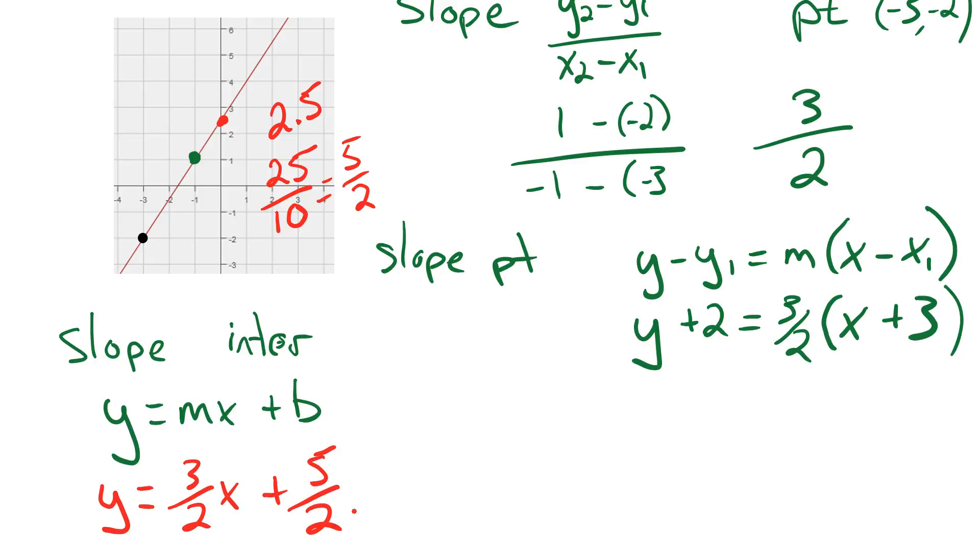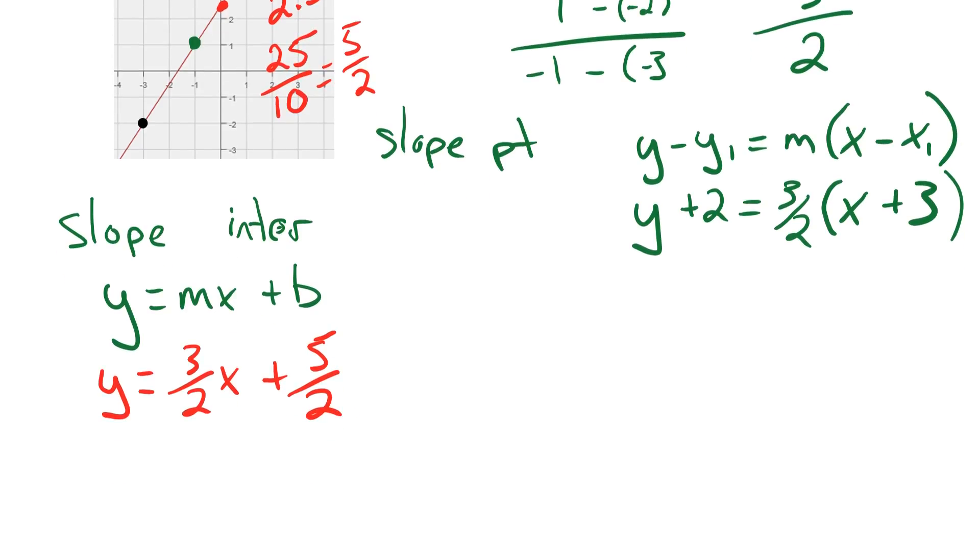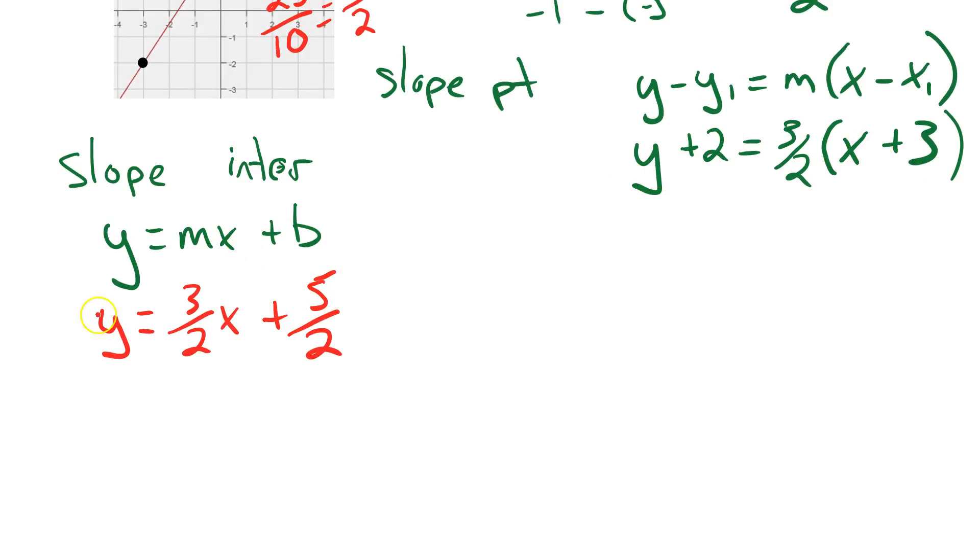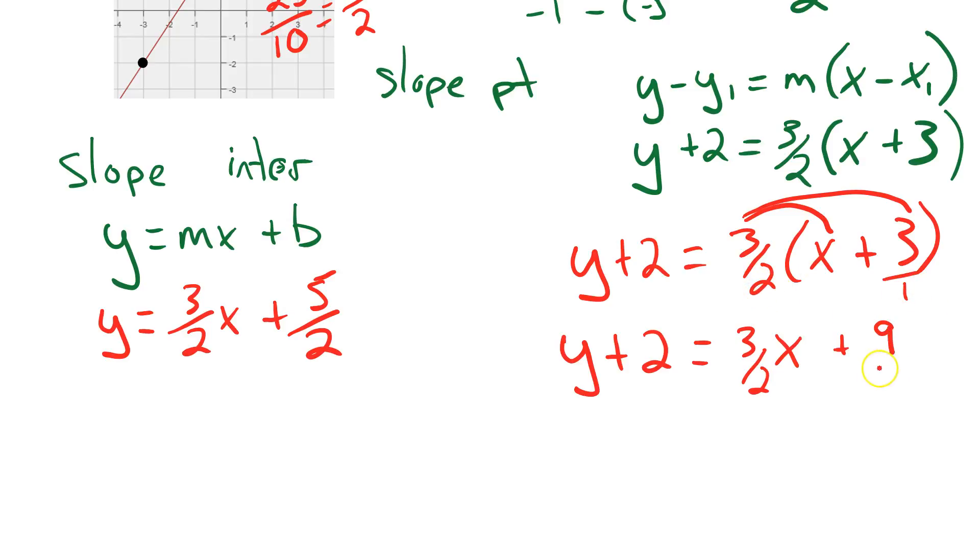Now the other option I have is to take my slope point form and manipulate it into this slope intercept form. In that case, what I would do is I will write out my formula. And first thing I do is distribute. This times this. This times this. So y plus 2 stays where it is. 3 over 2 times x is 3 over 2x. Now watch what I do here. 3 over 2 times 3. Well, 3 is really like 3 over 1. So when I'm multiplying fractions, I go numerator times numerator, denominator times denominator. 3 times 3 is 9, positive 9. And 2 times 1 is 2. 9 over 2.